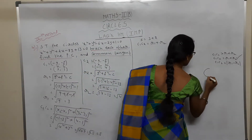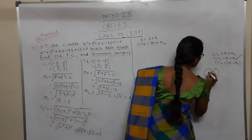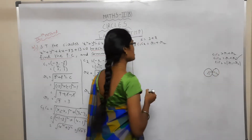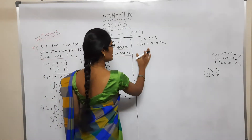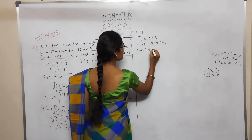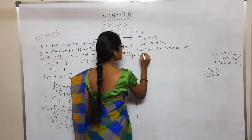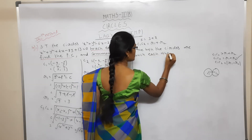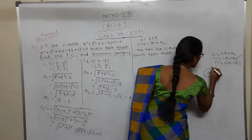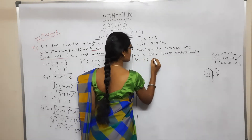Since C1C2 = r1 + r2, the two circles touch each other externally. In this case, when two circles touch externally, the point of contact is internal to the line segment C1C2. Therefore both circles touch each other externally.